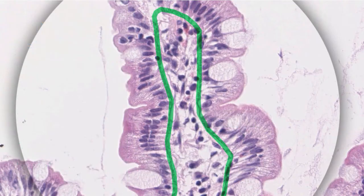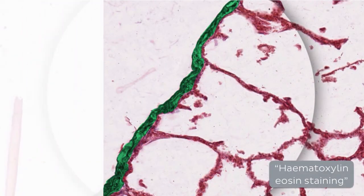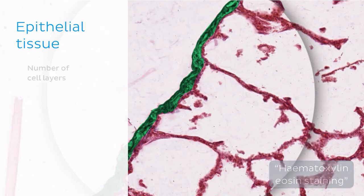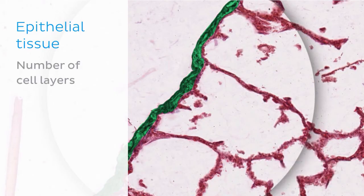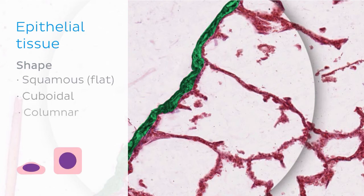When classifying epithelial tissue, several factors are considered. For example, the number of cell layers present — it can be classified as either simple when only one layer of cells is present, or stratified when two or more layers of cells are present in the tissue. It can also be classified according to the shape of epithelial cells — that is, as squamous, cuboidal, or columnar.